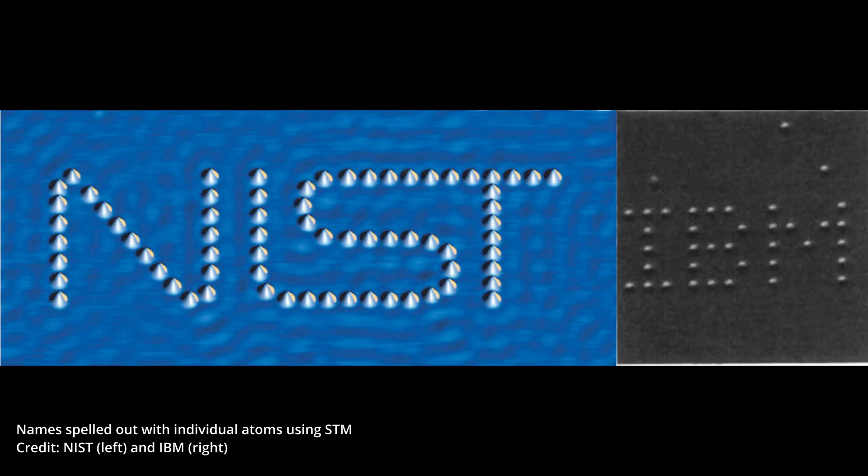The National Institutes of Standards and Technology, or NIST, and the company IBM have actually spelled out their names using individual atoms, with an STM to demonstrate this ability.